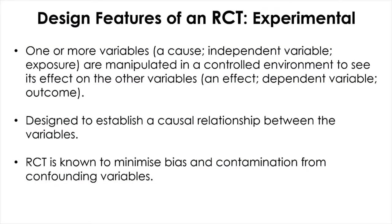The most important design feature of a randomized controlled trial is that it is an experimental design where one or more variables — called an independent variable or exposure — are manipulated by the experimenter in a highly controlled environment to see its effect on other variables. That other variable is the outcome measure or dependent variable, and this is the only design used to establish a causal relationship between those variables. The randomized controlled trial is known to minimize bias and contamination from confounding variables.